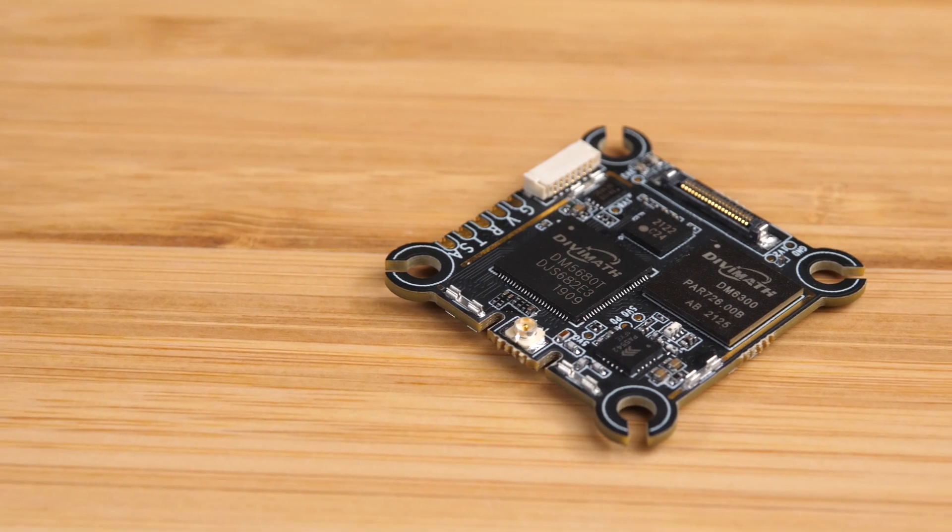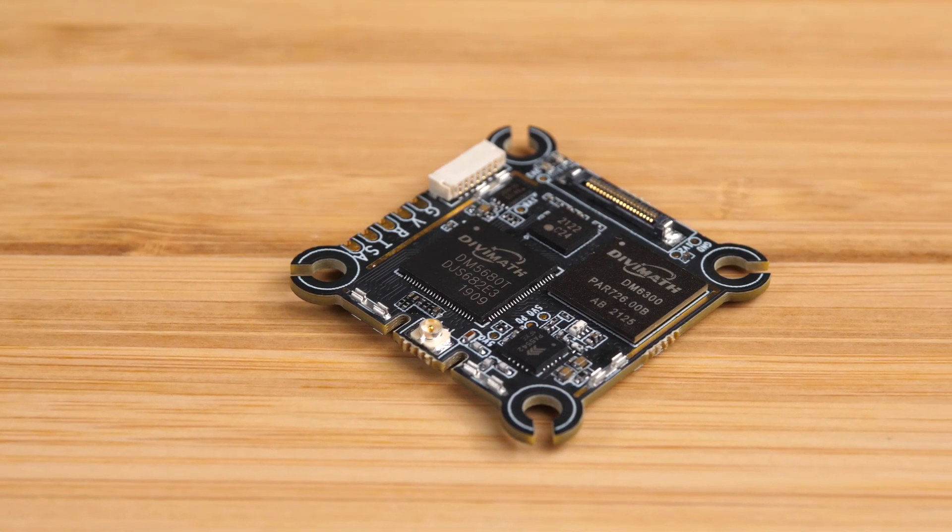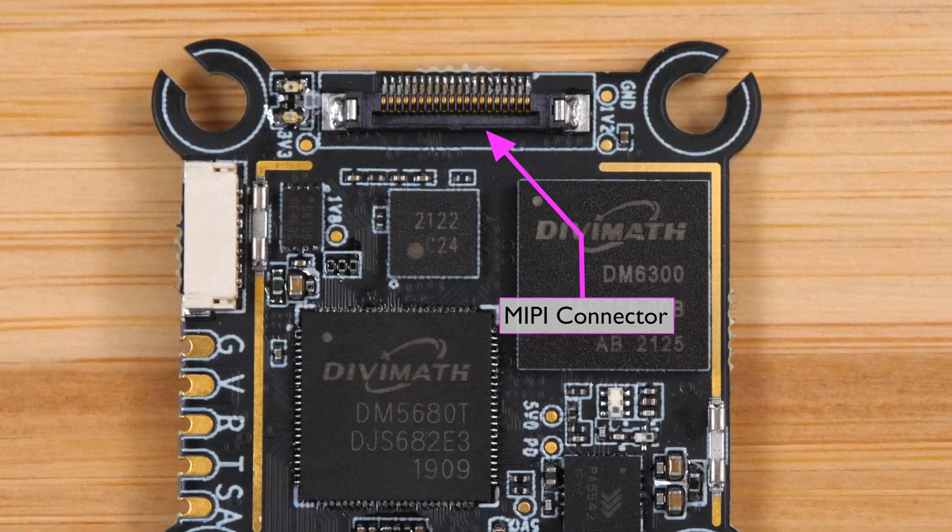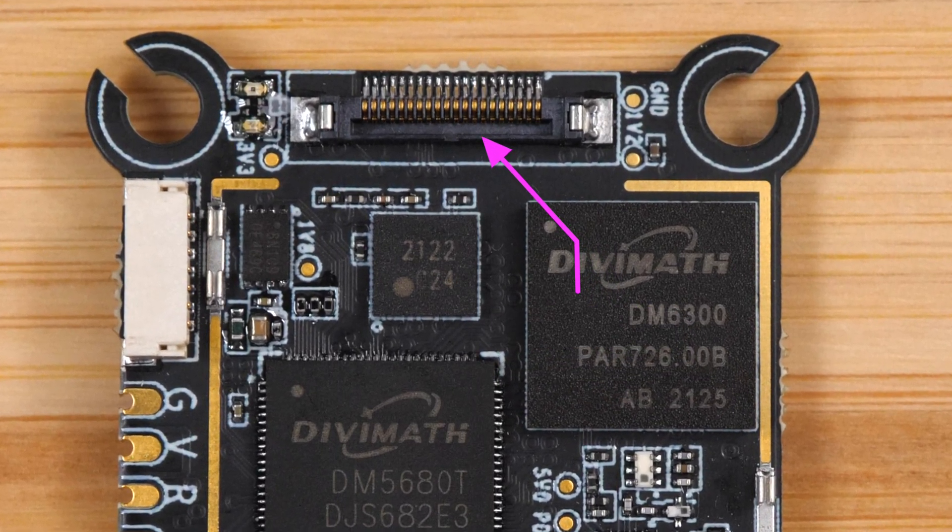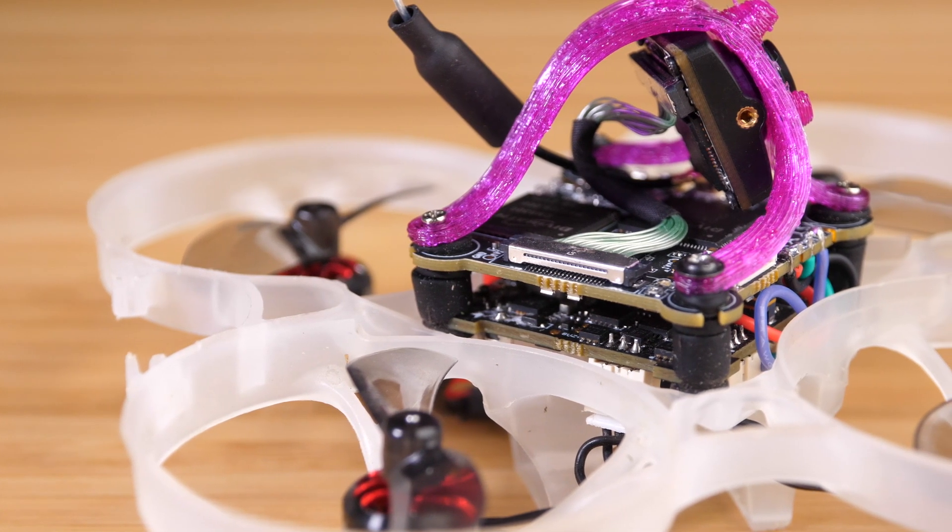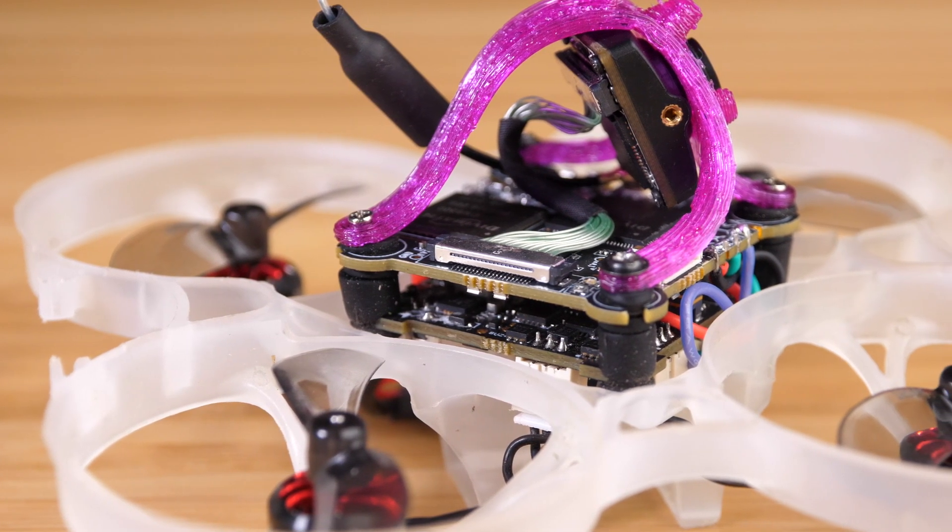Finally the last two connectors we have are for the MIPI camera cable and the antenna. The MIPI connector is exactly what we've seen before and there's nothing special here to hold the cable in place. If you're worried about it popping off in a crash I've heard of people putting a drop of E6000 glue on it to hold it in place.